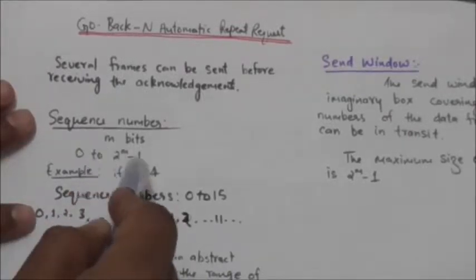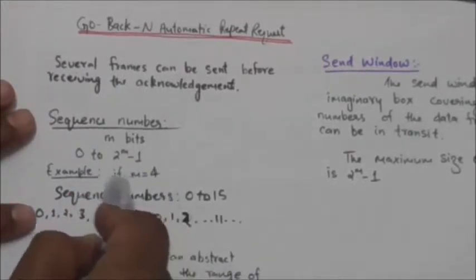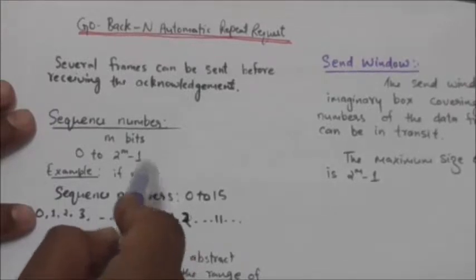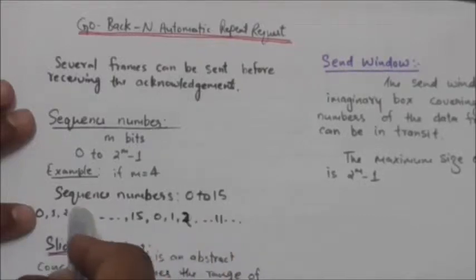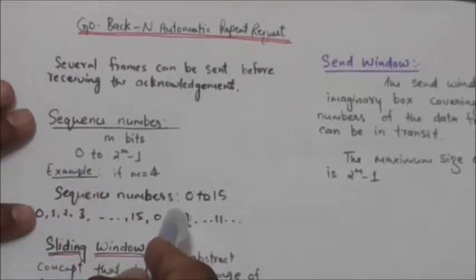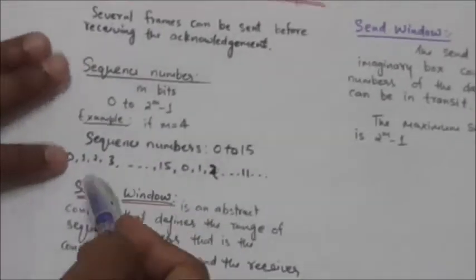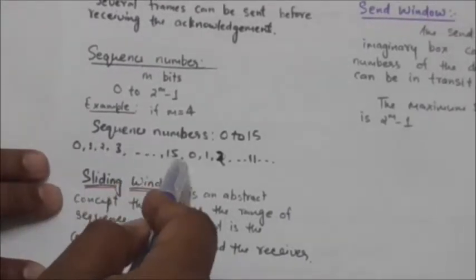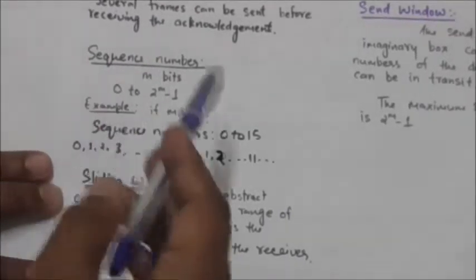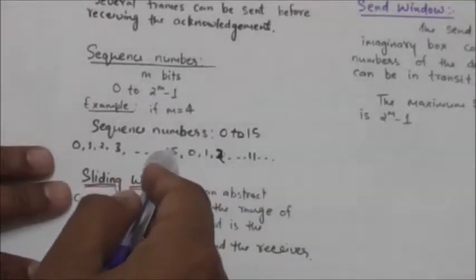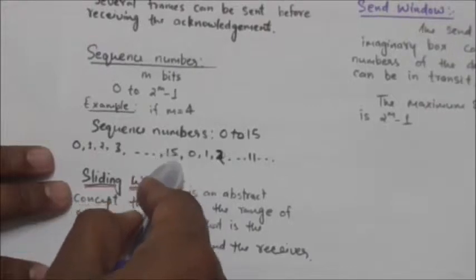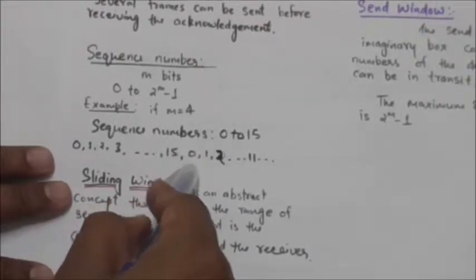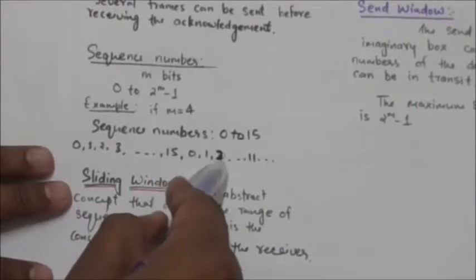For example, if m is equal to 4, then the sequence numbers will be from 0 to 15, including 15. However, we can repeat the sequence, so the sequence numbers are 0, 1, 2, 3, and so on up to 15, and after 15 the next number will be 0, then 1, then 2, then 3, and so on like this.